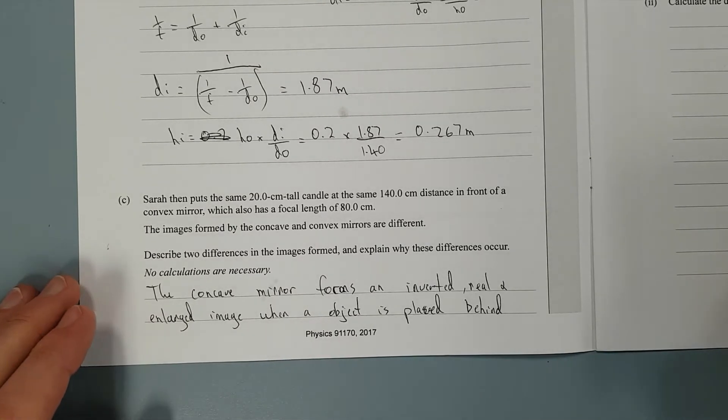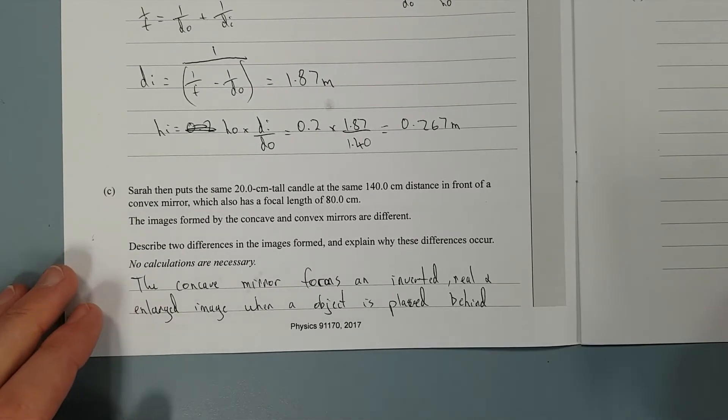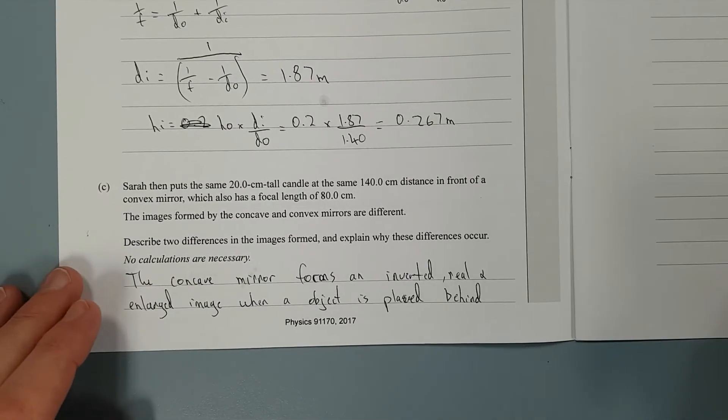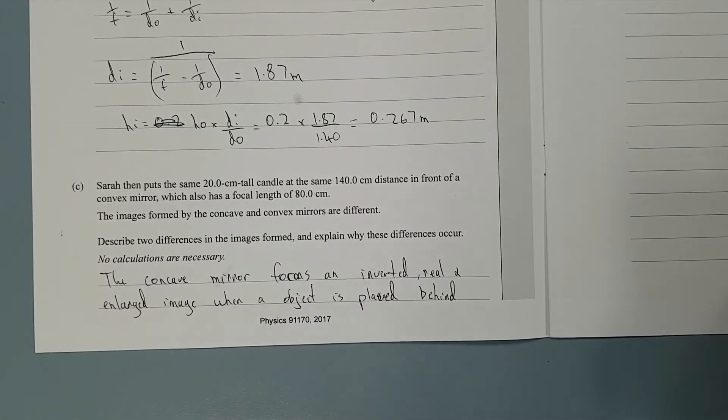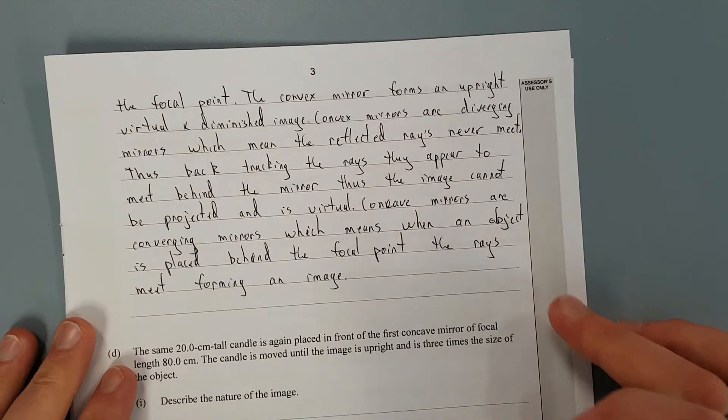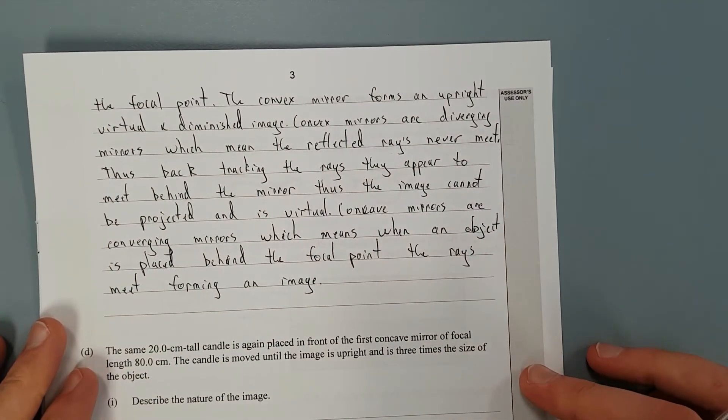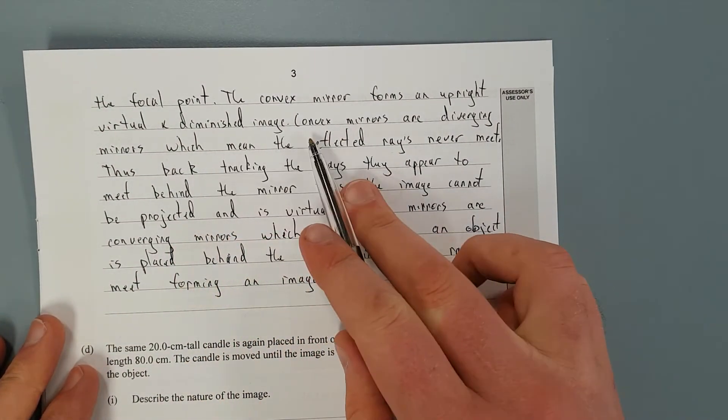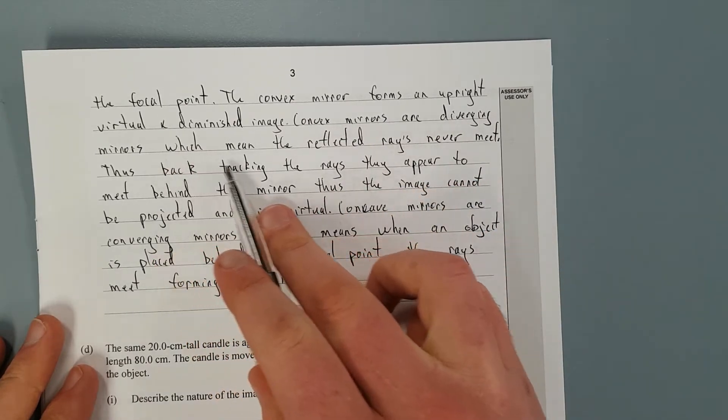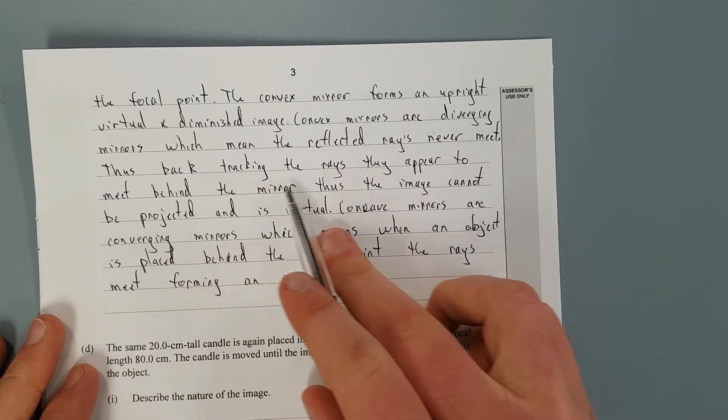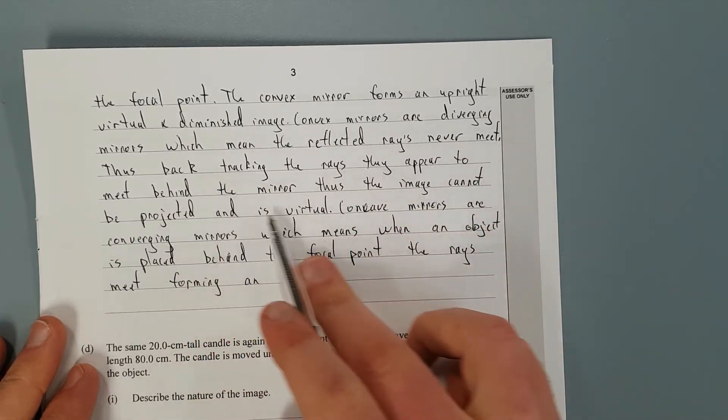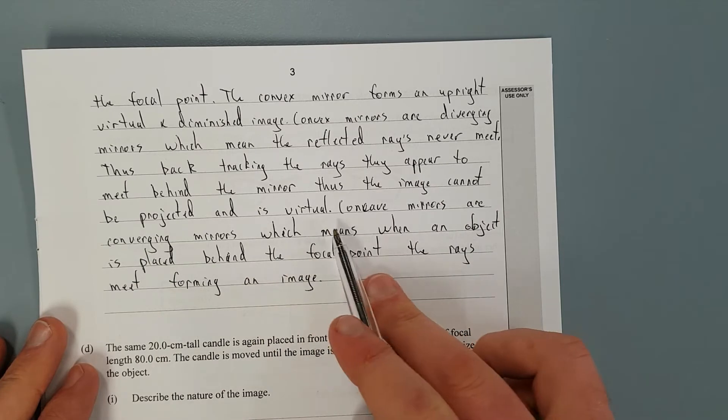So I've said, concave mirrors form an inverted, real, and enlarged image when an object is placed beyond the focal point. The convex mirror forms an upright, virtual, and diminished image. The convex mirrors are diverging mirrors, which means the reflected rays never meet. Thus, backtracking the rays, they appear to meet behind the mirror. Thus the image cannot be projected and is virtual.